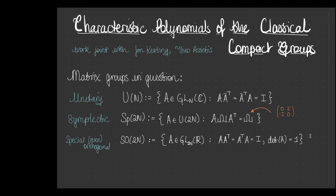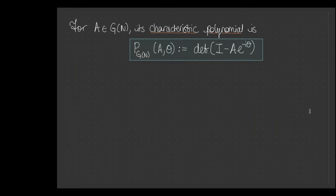We don't necessarily have to stick to even-dimensional special matrices — we can do other more general orthogonal matrices. I will write capital G of N for any of these matrix groups. For any of these matrices — unitary, symplectic, or special orthogonal — the characteristic polynomial is given by P with two arguments, A and theta. The characteristic polynomial will change depending on which matrix you pick and which point you evaluate the polynomial. This subscript will denote which matrix group I'm thinking about.